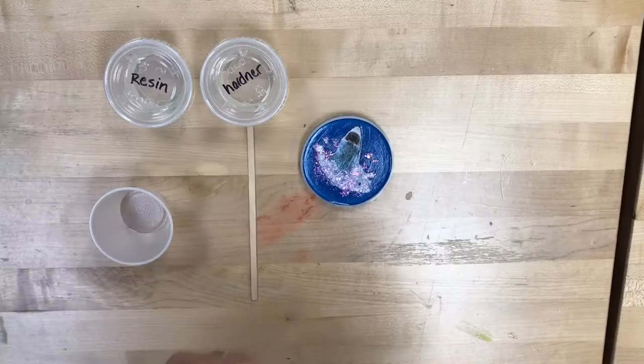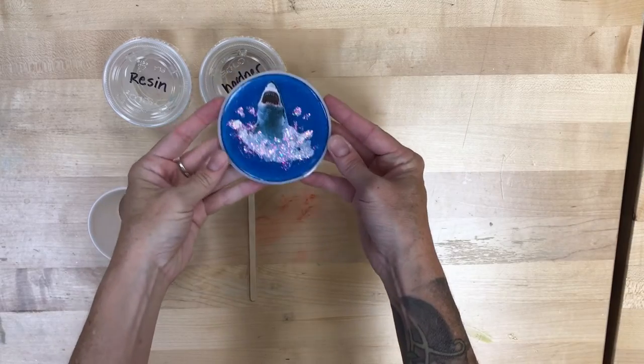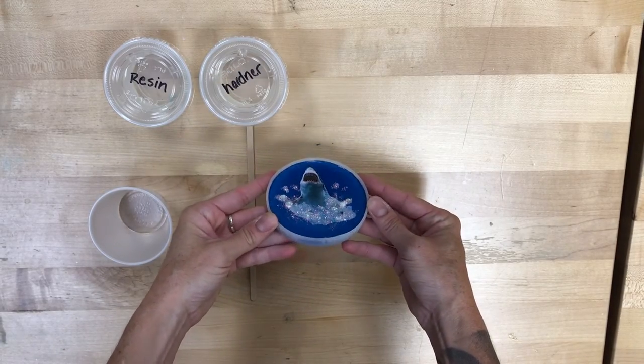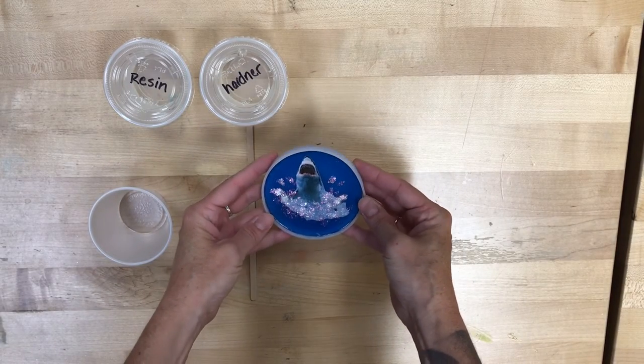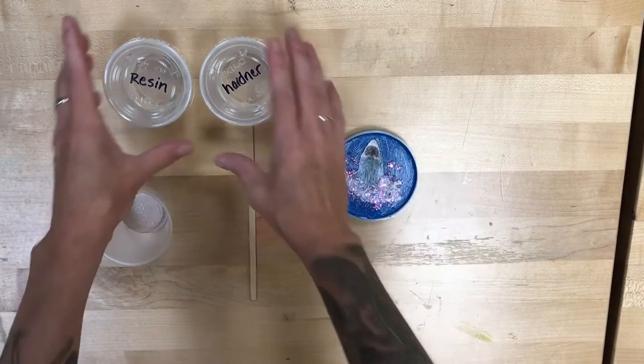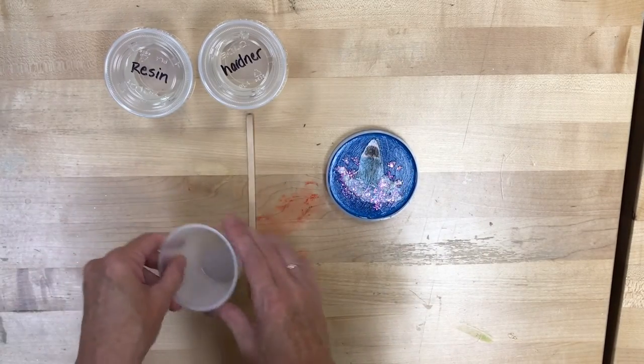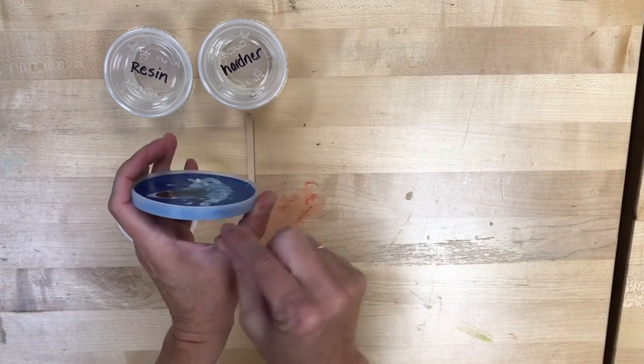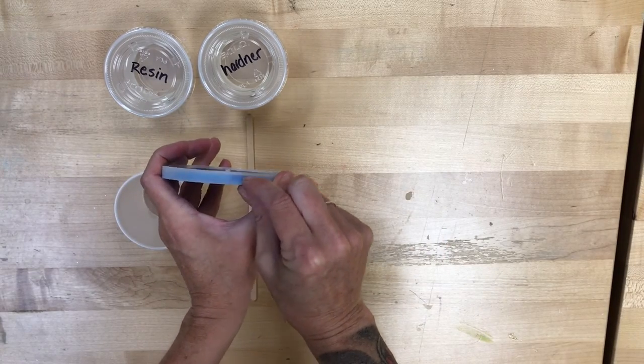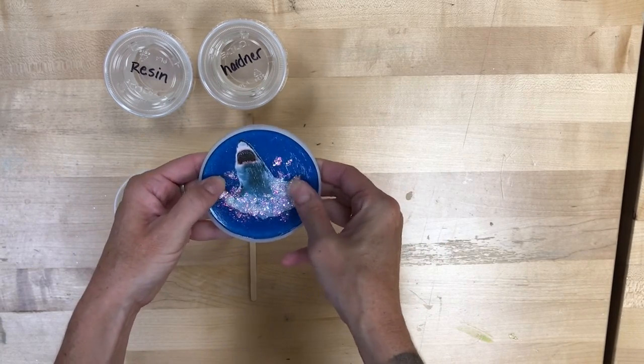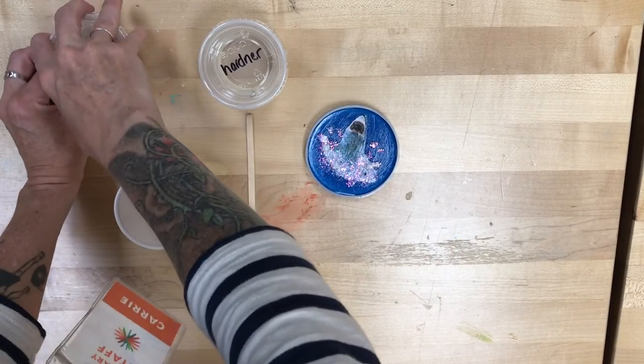Once it is completely dry, it'll look a little bit like this. So a very fancy, glittery shark coming out of the water. And this is when we're going to take the very last bit of our resin and our hardener and take a look and see how much room you have left in your coaster. See how high your glitter is.